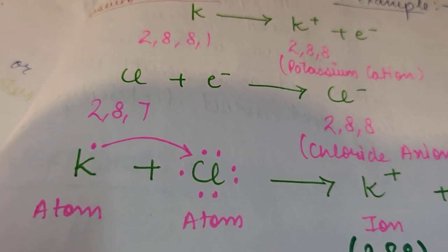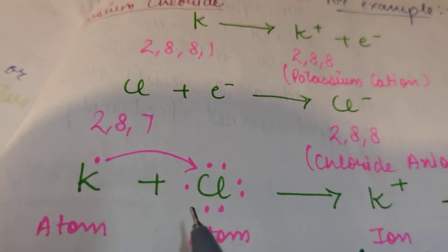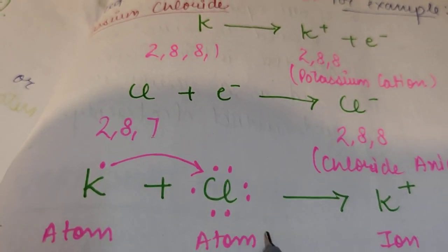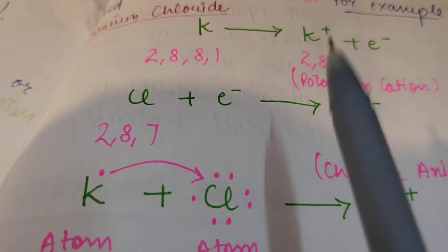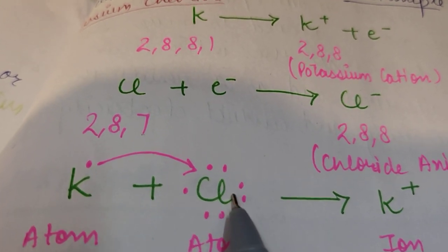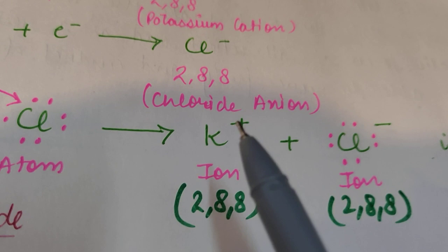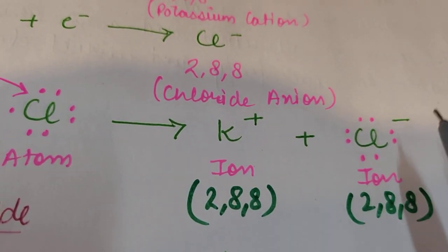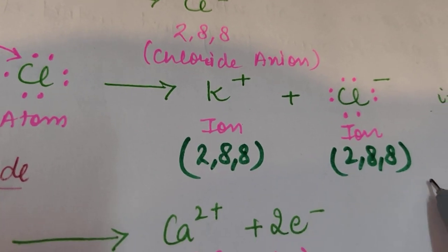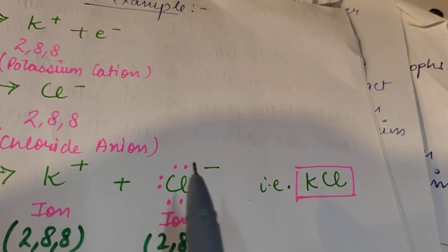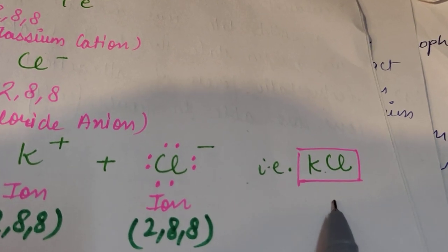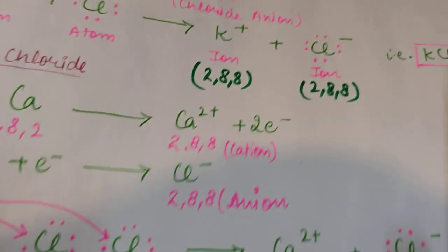Chlorine has seven valence electrons, so we draw seven dots. During the reaction, potassium gives its one electron to chlorine, forming K⁺ and Cl⁻. Both achieve the 2,8,8 configuration. In this way K⁺ and Cl⁻ are formed, which we write as KCl.